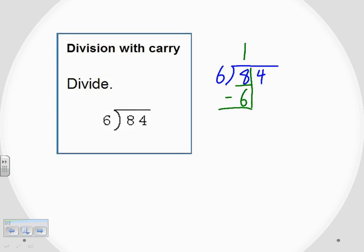We always subtract to take away that portion. So eight minus six, that gives us two. And now we need to bring down the next digit, whatever it is. So in this case it's a four.